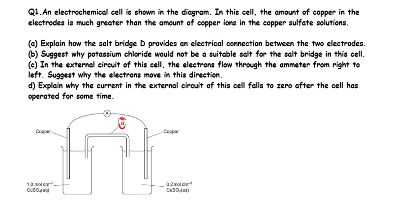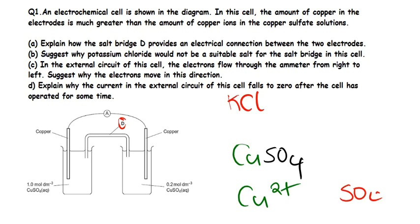Part B suggests why potassium chloride would not be a suitable salt for the salt bridge in this cell. When you look at potassium chloride in our solutions, we have copper sulfate present. This copper sulfate is going to be broken down to copper two ions and sulfate.